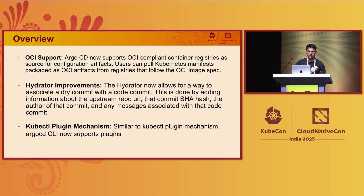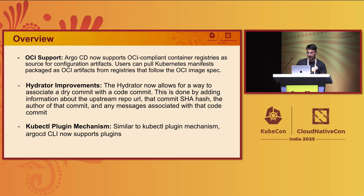The second feature was hydrator improvements. Hydration is generally a mechanism of pushing your rendered manifests — which you get from Kustomize or Helm charts — back to a git repository so you can see which manifests are getting applied. Now the hydrator allows a way to associate a dry commit with a code commit. You can do that by adding the repository URL that the hydration maps to, the commit SHA you want to attach it to, and the author of that commit, along with an optional message.